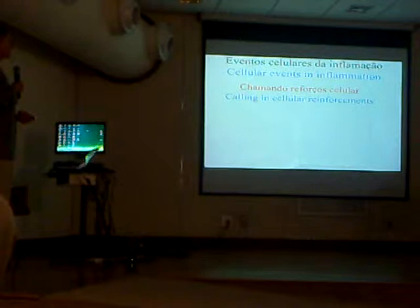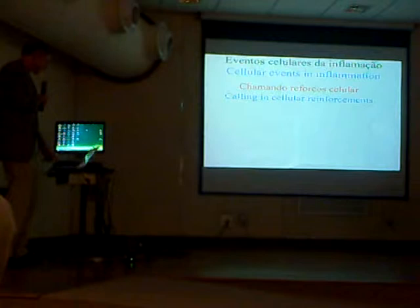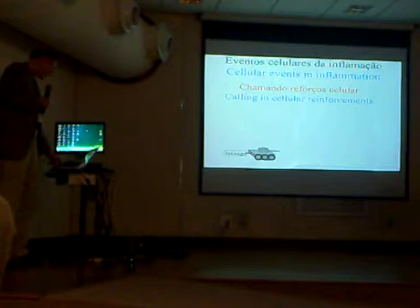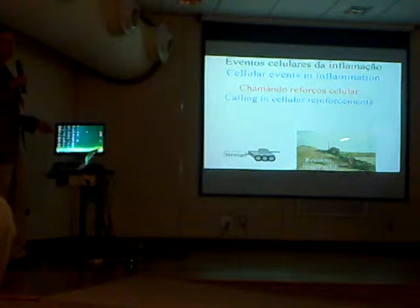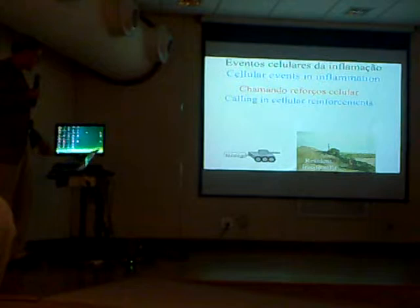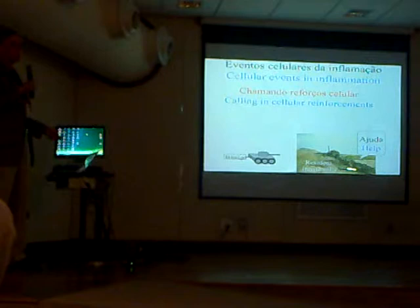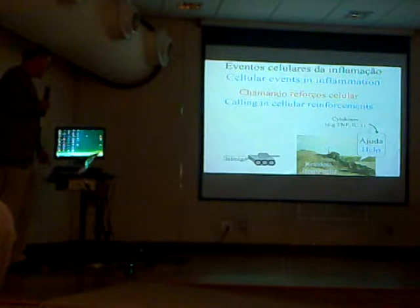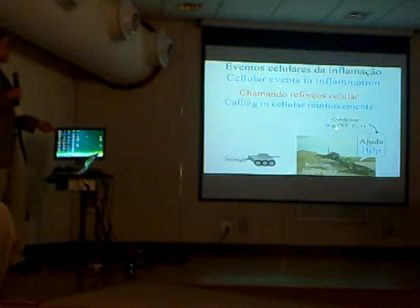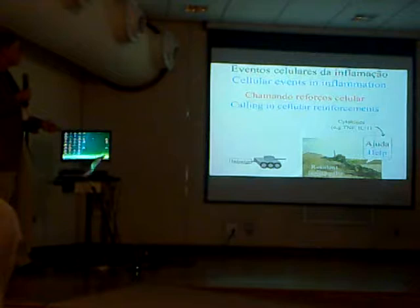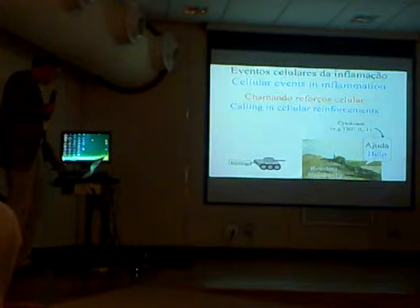Turning now to the cellular events occurring in inflammation, the goal is to call in cellular reinforcements. The enemy enters the tissue, and the resident cells of the innate immune system recognize the problem and begin to engage it. Because there aren't enough of them to handle it alone, they call for help by producing various cytokines — such as tumor necrosis factor and interleukin-1 — that orchestrate the subsequent events.